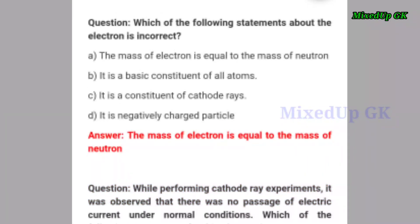Next question: which of the following statements about the electron is incorrect? Option A: the mass of electron is equal to the mass of neutron. Option B: it is a basic constituent of all atoms. Option C: it is a constituent of cathode rays. Option D: it is a negatively charged particle. The correct answer is option A — the mass of electron is equal to the mass of neutron.